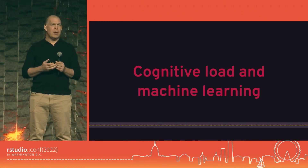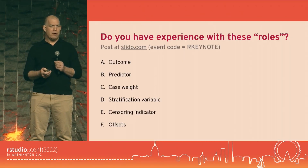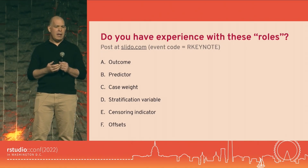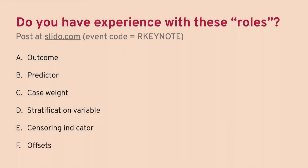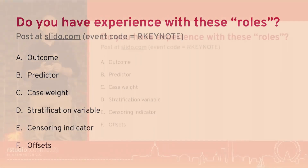One aspect of machine learning is we have to think about what our data are and how we're going to use them. So we're going to do our first Slido poll. The types of roles you might have when building models — A and B are things we normally think about: predictors and outcomes. But there are more sophisticated things like case weights, frequency weights, importance weights, survey weights, stratification variables, censoring indicators, and offsets for Poisson data.